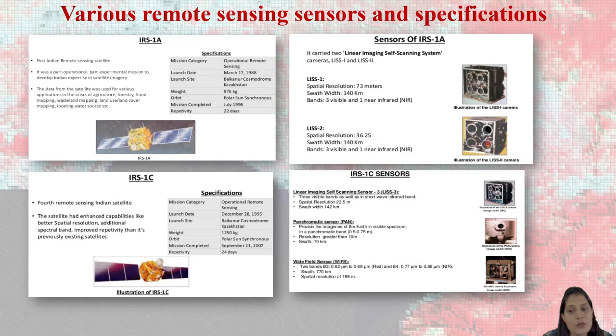Similarly, IRS 1C. Now, according to that, we have decided that for the features which we want to extract with the other features, we are accordingly making the sensor. Look at 2 IRS 1C sensor. Linear which is known as LIS 3 which is freely available data. You can even download. Yes, we are going to see how we can download and how we can work for it. You can see here PANG that is known as panchromatic sensor which has a range of 0.5 to 0.75. SWAT is 70 kilometers and WIFs. These are the various sensors we have for IRS 1C.